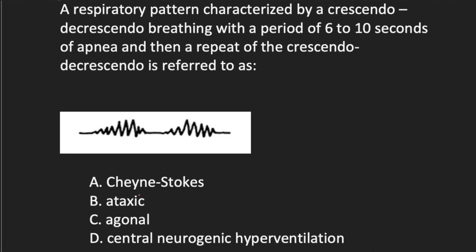The National Registry can pop in images now, so we're trying to incorporate that as well. What is this pattern? A respiratory pattern characterized by a crescendo — a buildup — and decrescendo — moving back down — breathing, with a period of six to ten seconds of apnea, and then a repeat, is referred to as Cheyne-Stokes breathing. That is the classic pattern: a buildup, a decrease, and then a pause, and then it happens again.